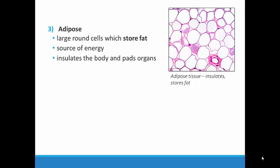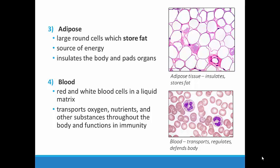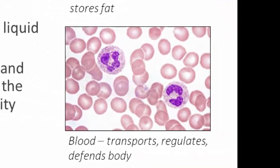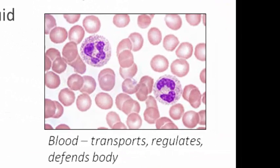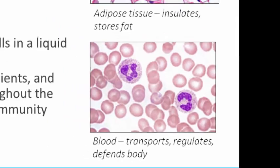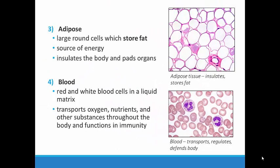The fourth type of connective tissue is blood. Some people actually consider blood to be an entirely different type of tissue altogether, calling it vascular tissue. But for the purpose of our course, we will consider blood to be connective tissue. Blood is made up of red blood cells and white blood cells suspended in a fluid called plasma. We will learn more about the structure of blood in Unit 2. The main function of blood is to carry materials such as oxygen, nutrients, and wastes throughout the body, as well as helping with immune functions such as fighting off infections.